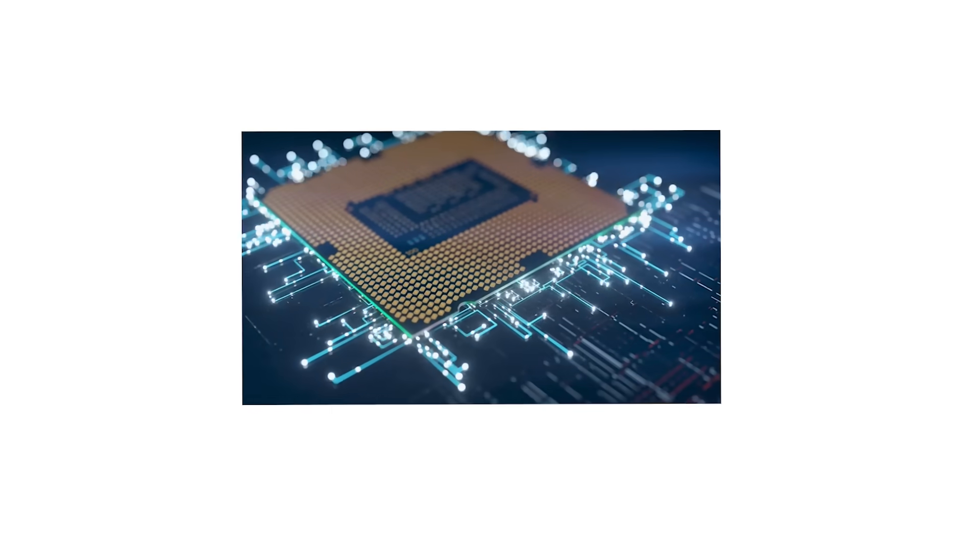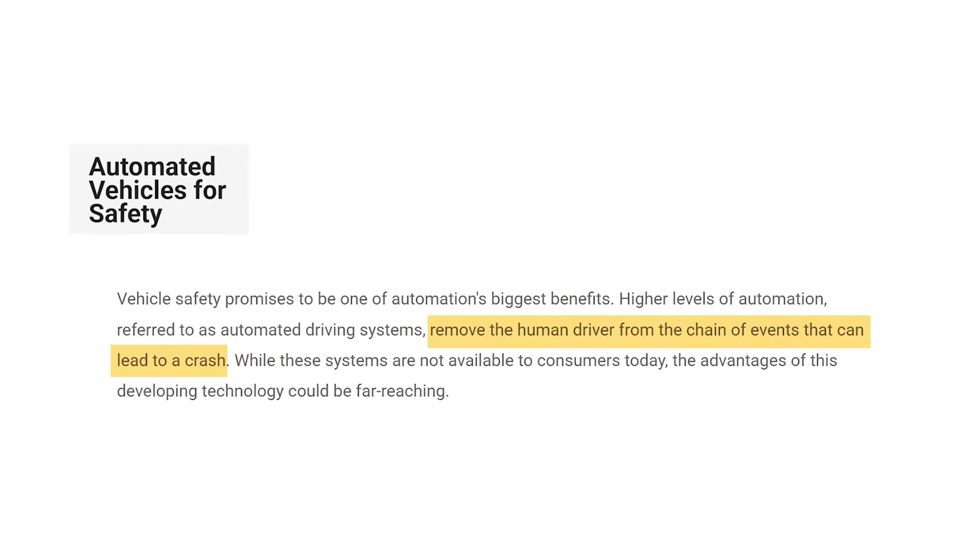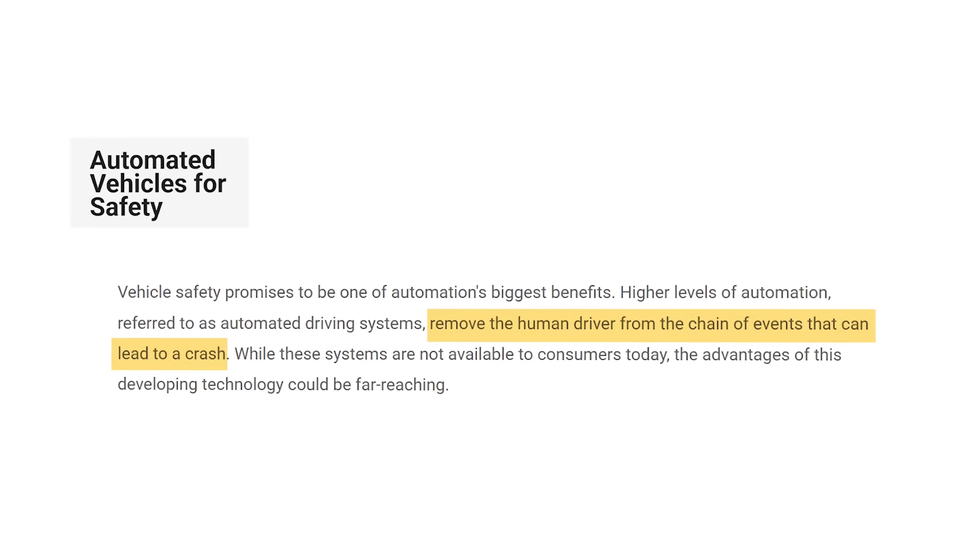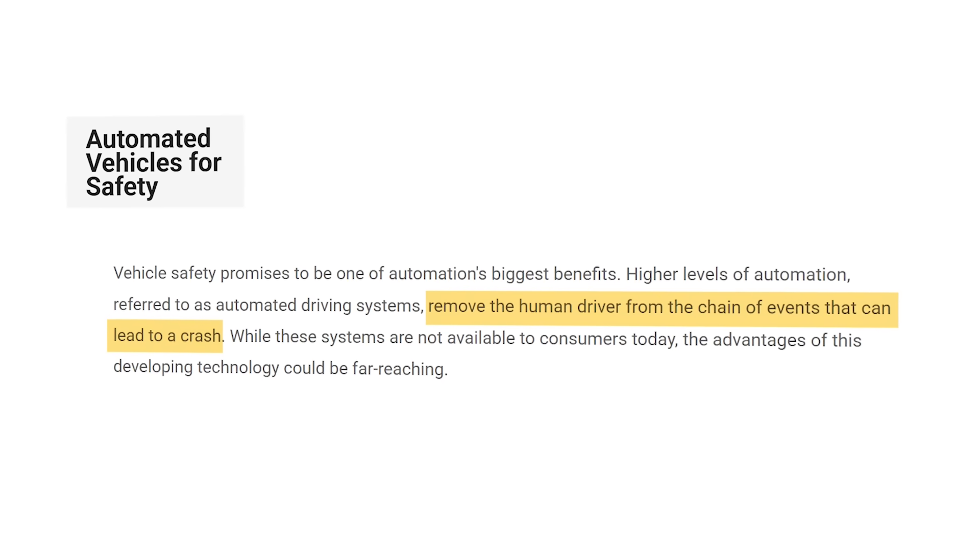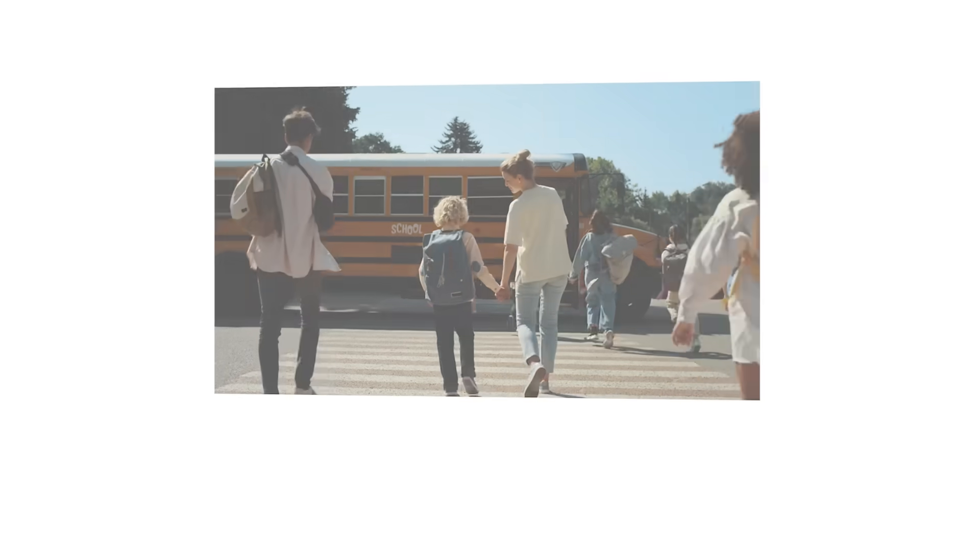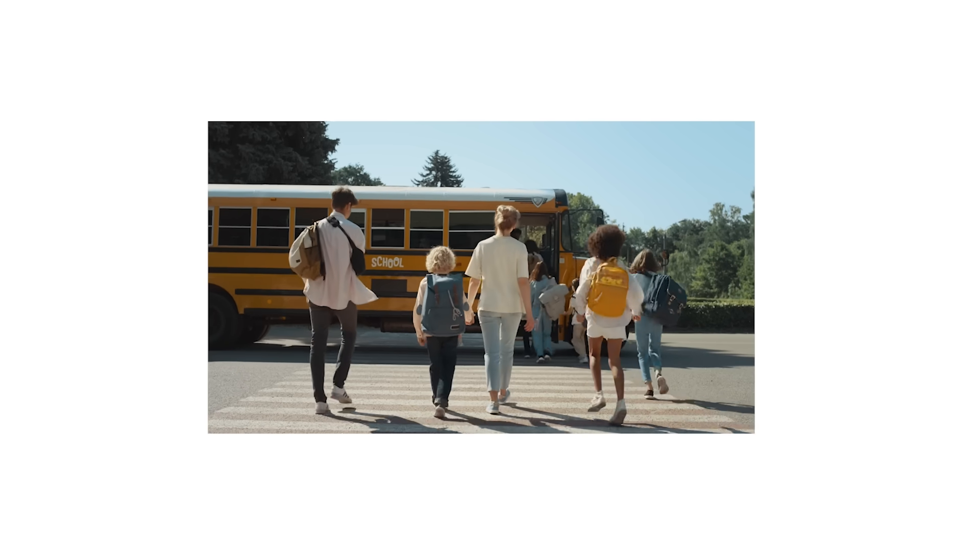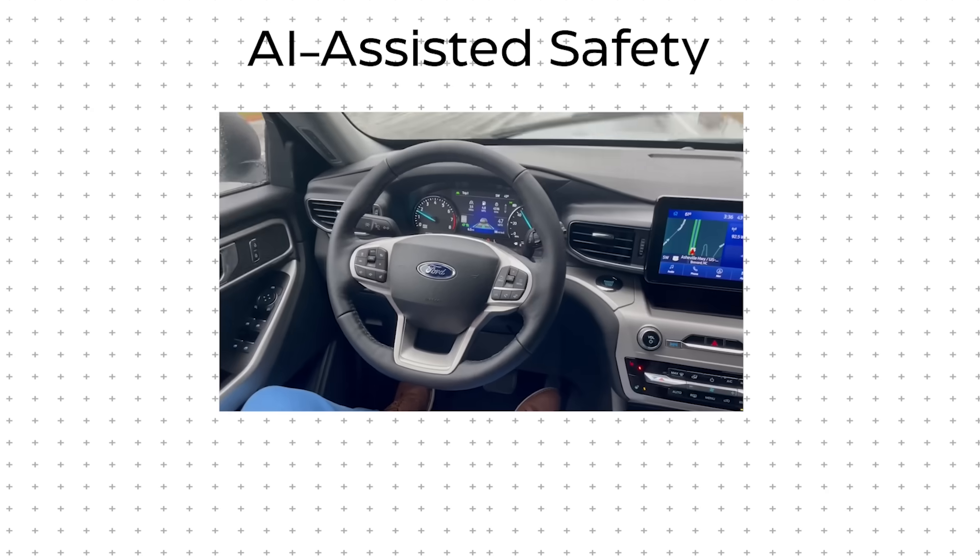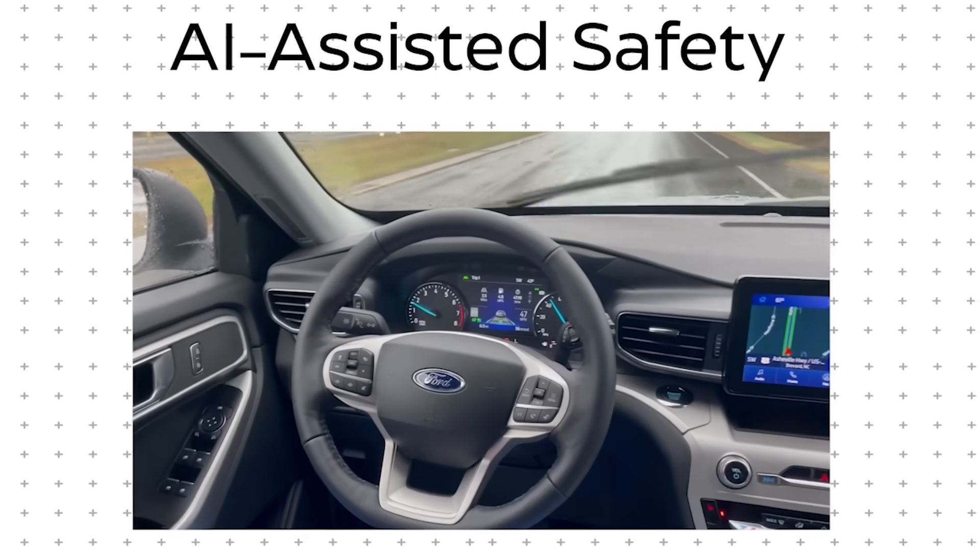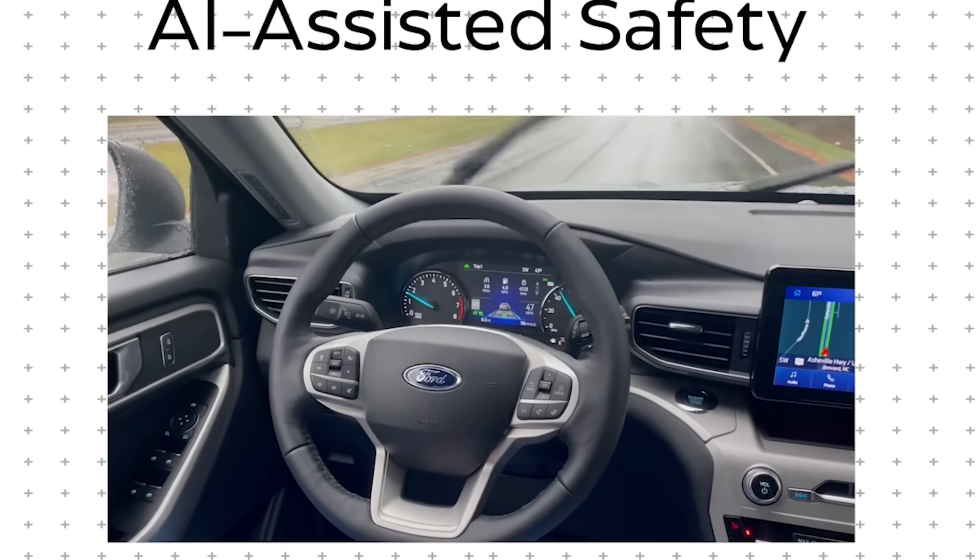Beyond seatbelts, automation is another frontier. Some experts believe self-driving school buses could eliminate human error entirely. No distracted driving, no misjudged turns, no reckless decisions. But self-driving technology isn't perfect, and trust is a problem. Would parents be comfortable putting their children on a bus with no human driver? Probably not. A more realistic future is AI-assisted safety features. Think automatic braking, pedestrian detection, lane-keeping technology. These systems don't replace human drivers, they help them. And over time, they could make school buses even safer than they already are.